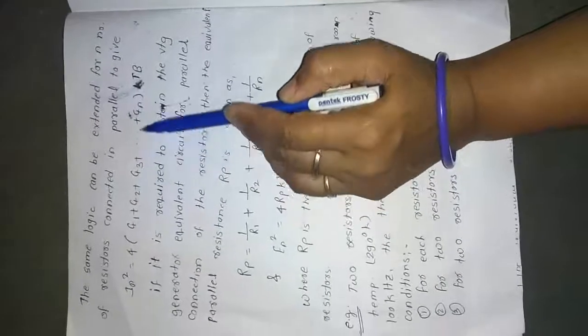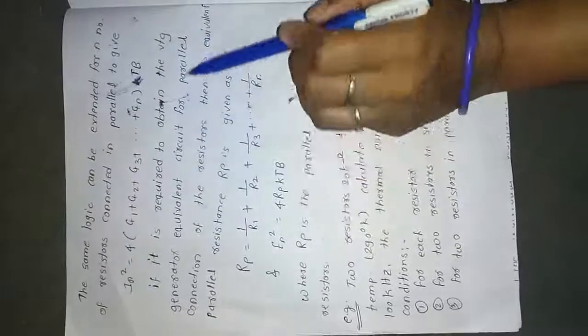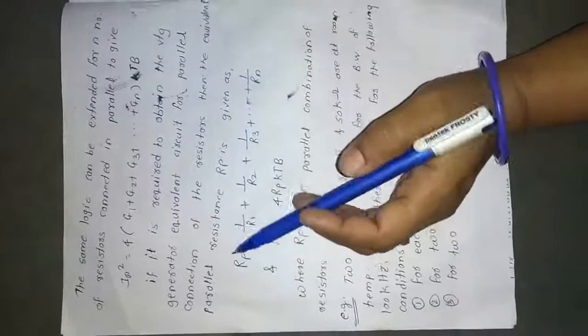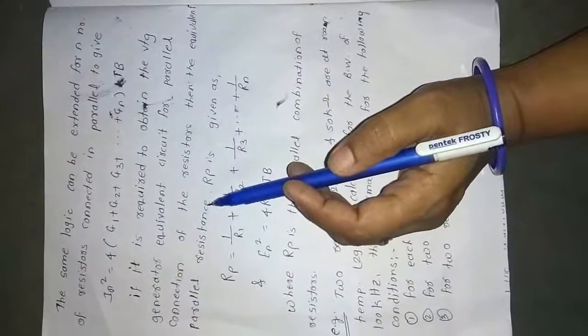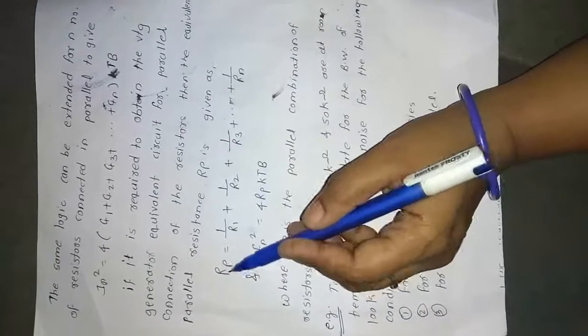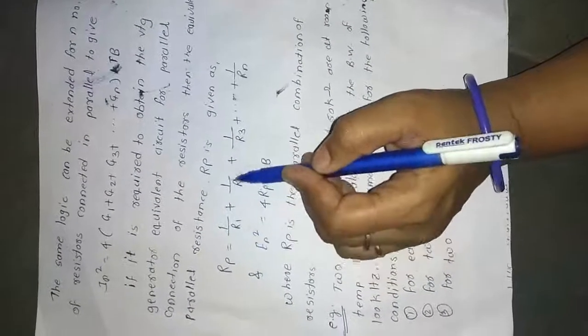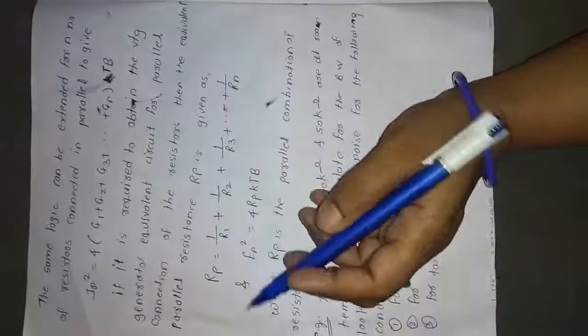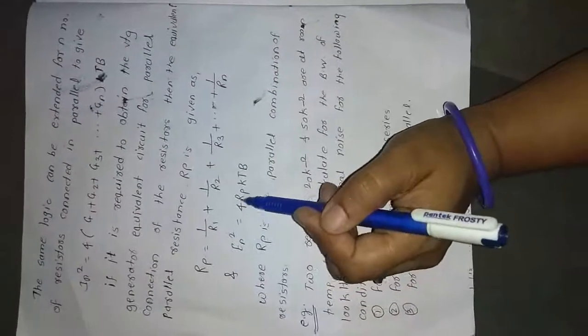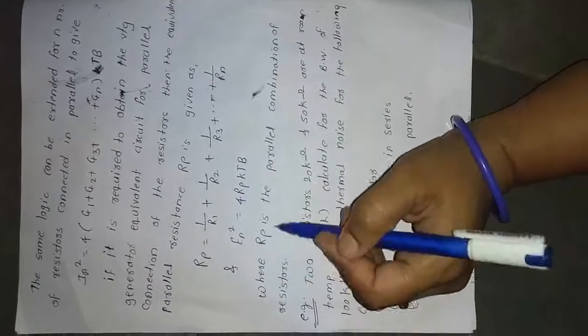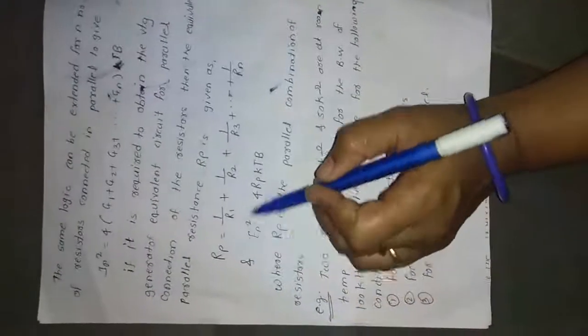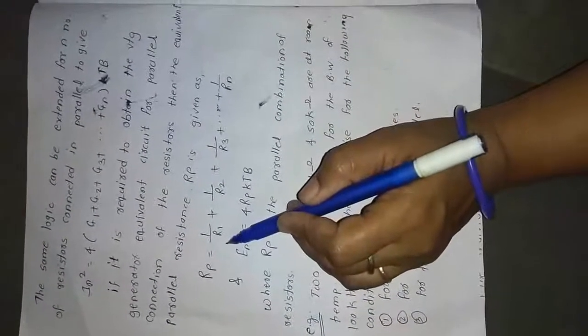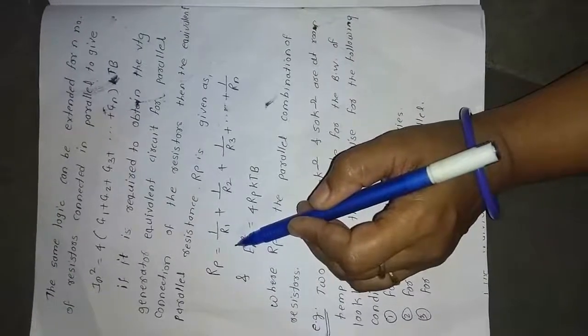The same logic extends to any number of resistors connected in parallel: IN² = 4(G1 + G2 + G3 + ... + Gn)KTB. If we require the equivalent voltage noise for the parallel connection, the parallel equivalent resistance is Rp = 1/(1/R1 + 1/R2 + 1/R3 + ...), and EN² = 4·Rp·K·T·B.